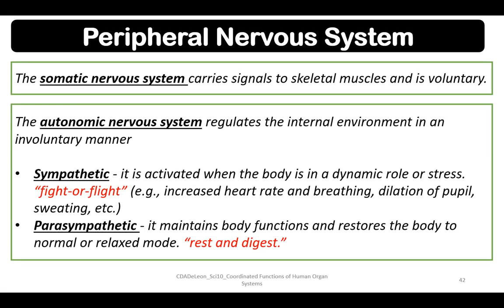The somatic nervous system carries signals to the skeletal muscles, which is voluntary — meaning we can control this. The autonomic nervous system regulates the internal environment in an involuntary manner, so we cannot consciously control this type of process.